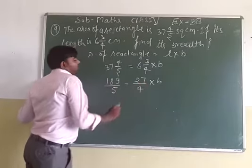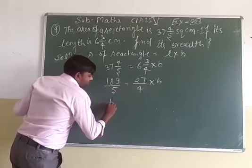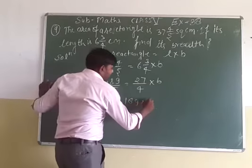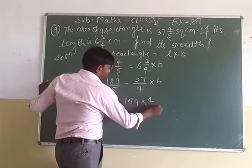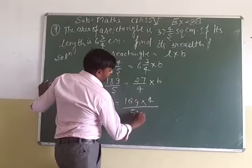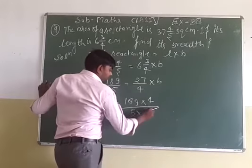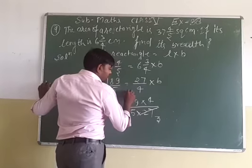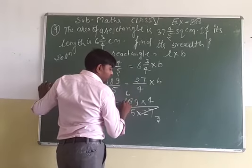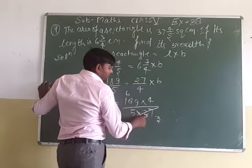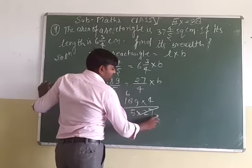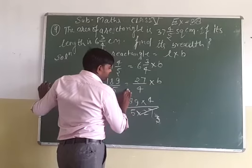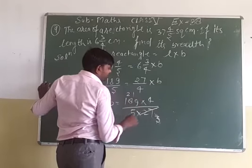When we move length to the other side it will divide. So B equals 189 multiplied by 4, upon 5 multiplied by 27. Dividing by 9: 9 threes are 27, and 9 into 189 gives 9. Then dividing by 9 again gives us the simplified form.